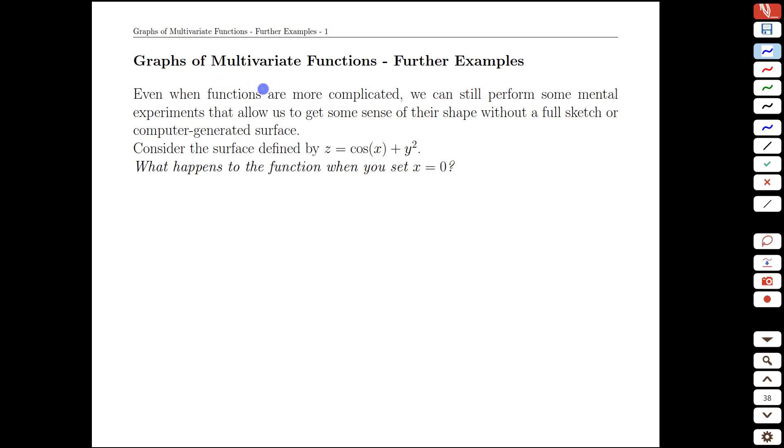In this video we continue our study of multivariate functions by looking at the function z equals cos of x plus y squared. Now even though this function is more complicated than some of the ones we've seen before, we can still perform some experiments to see what the shape might look like and try to visualize it, which will make it easier to recognize when we see a computer generated form of it.